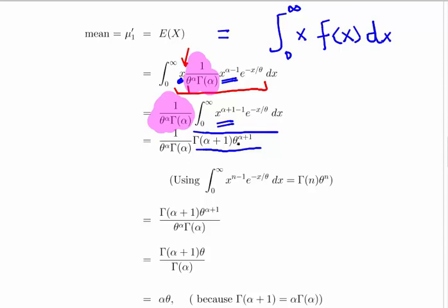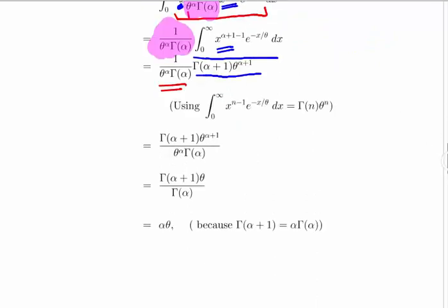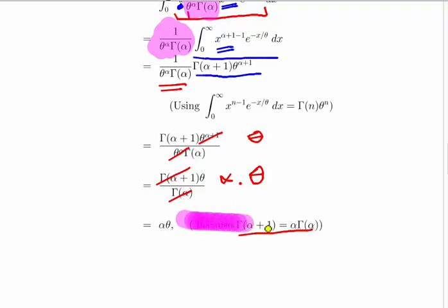We have the constants 1 over theta to the power of alpha times gamma(alpha). The theta to the power of alpha plus 1 divided by theta to the power of alpha leaves just theta. The Gamma function of alpha plus 1 equals alpha times gamma(alpha), so the gamma functions cancel and we are left with alpha times theta. This confirms the mean of the Gamma distribution is alpha times theta.